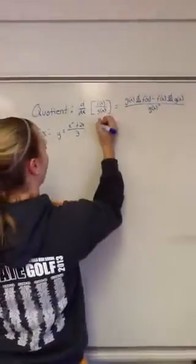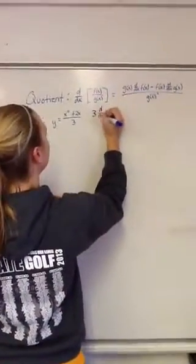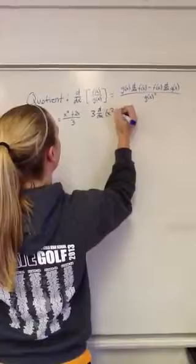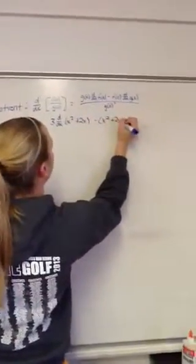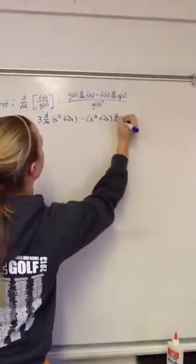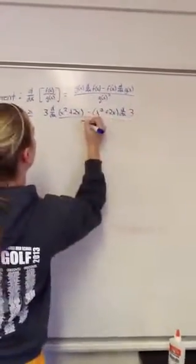So then when we went on to do this, we would take low, d, high, minus high, d, low, all over low squared.